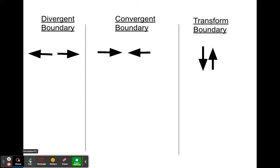Convergent is the opposite. They're coming together the same direction. Think of the C in convergent for coming together, getting closer, and then transform. They're kind of just rubbing against each other. They're kind of in opposite directions, rubbing. And all of these can cause different things to happen.